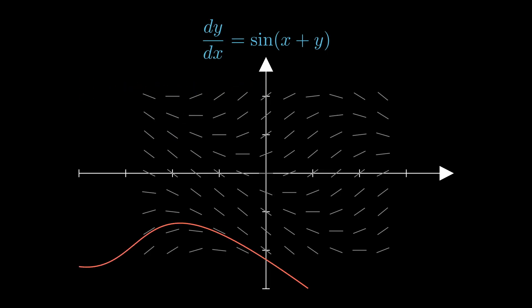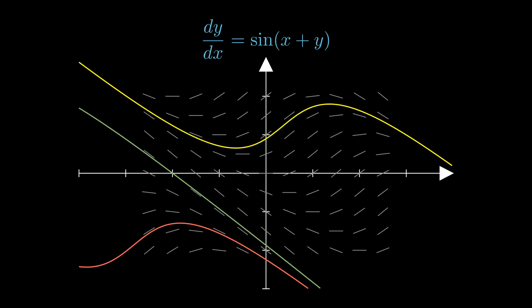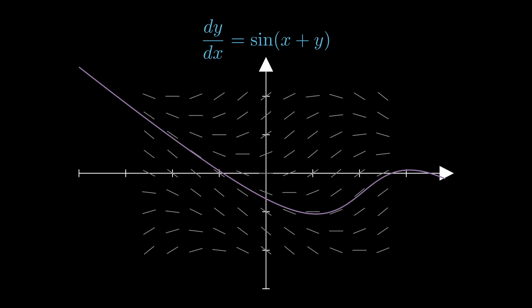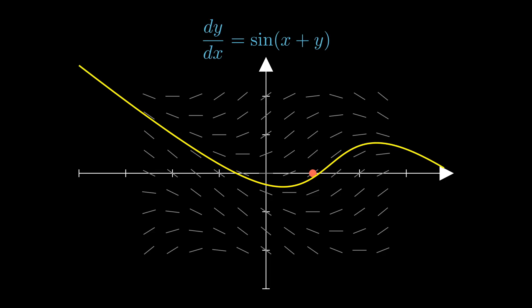Then all we need to do is draw lines that follow the different slopes, and we get to see what the different solutions look like. Sometimes we're also given an initial condition — some specific point that the function has to go through — which we can then draw a line that passes through that point.